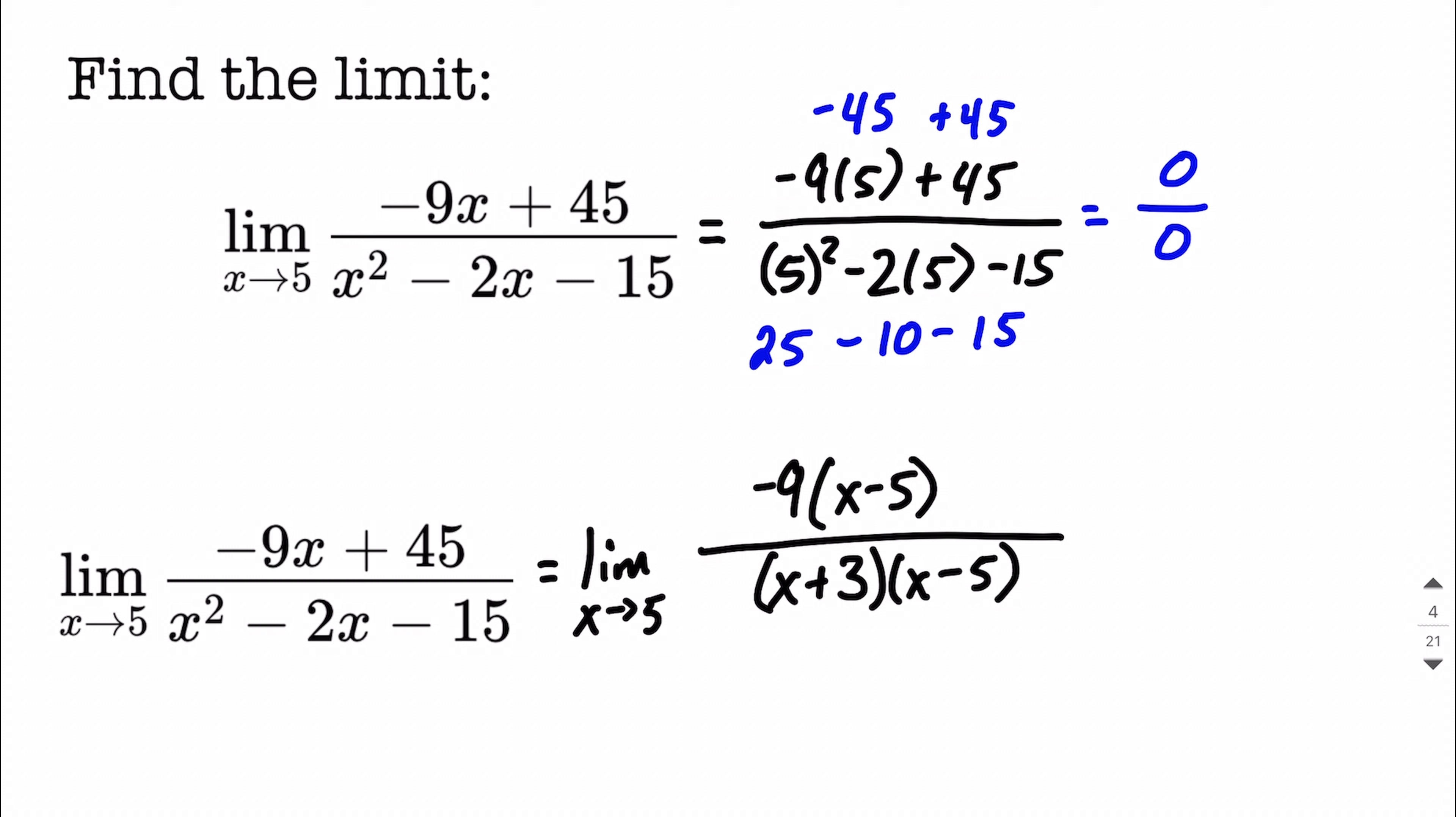Then we need to double-check ourselves just to make sure that as we're multiplying back out, 3 multiplied by negative 5, sure enough, does give us the negative 15. That was this negative 15. But also, if we were to add those values together, positive 3 plus a negative 5, the result works out to be negative 2, which is our coefficient on that middle term.